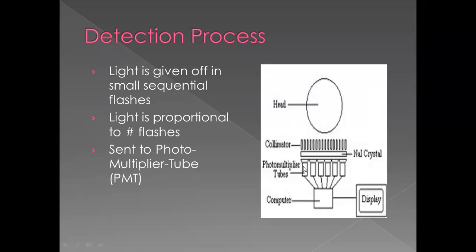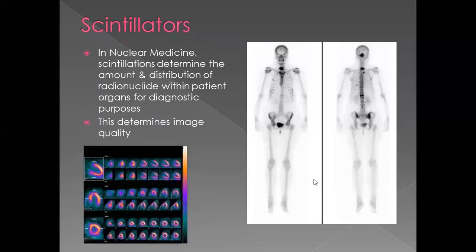The PMT tubes transfer photons to electrons and then to electrical pulses, which are sent to the computer to display the image. The light given off from the crystal is in small sequential flashes, and the signal is proportional to the number of flashes. Whatever number of photons comes from the source or patient is faithfully captured by the crystal and sent on to the PMT tube. Two of the most common scans in nuclear medicine are cardiac and bone scans, and you can see here that we get great resolution and great images.